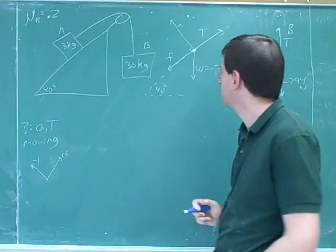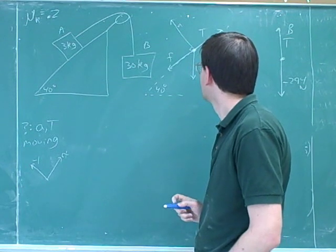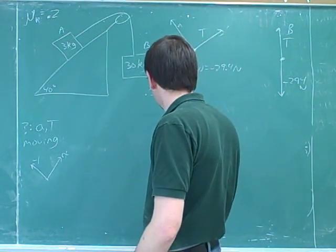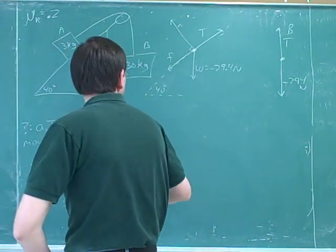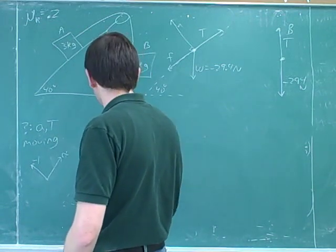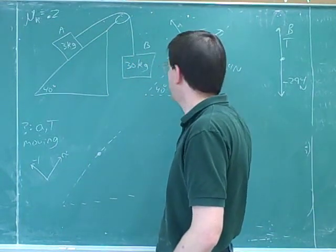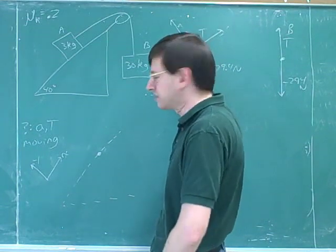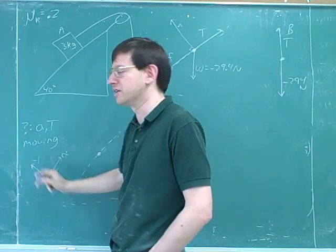We're done with our free body diagrams. The next task is to break each force into components — specifically for body A. The weight is the only thing we have to break into components because the other forces are already parallel to one of the axes. That was the whole reason we chose these axes, so we could break as few things as possible into components.